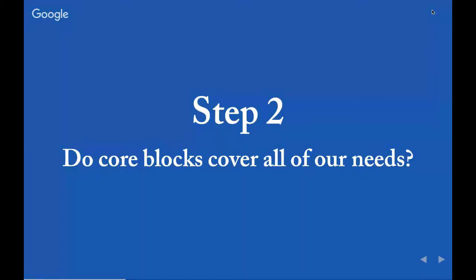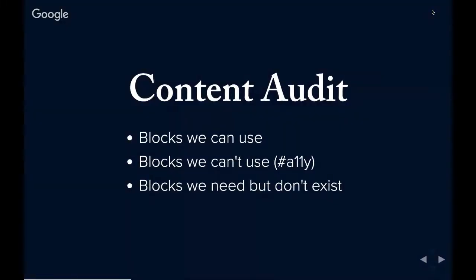Step two: we know what our editor looks like and we can see the giant list of core out-of-the-box blocks. The question is: do these core blocks cover everything our content editors are expecting? So we decided to do a content audit. This basically involved looking at all of our websites — or a good chunk of them — and seeing what kinds of content our editors are using, then correlating those content types with the set of out-of-the-box blocks that Gutenberg comes with. We separated everything into three categories: blocks we can definitely use, blocks we can't use in Gutenberg, and many of those turned out to be accessibility reasons.